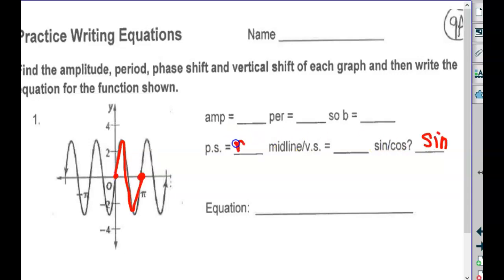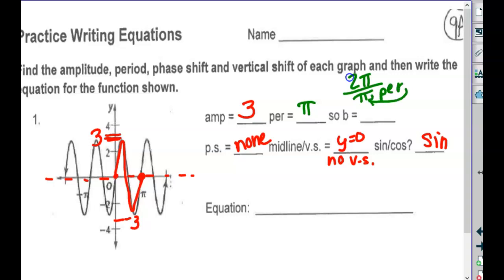For this particular one, would you rather call it a sine or a cosine? If we call it a sine, we won't need a phase shift. The midline is clearly still at zero or no vertical shift. The amplitude is three. The period finishes at pi. So how do we find b again? Two pi over the period.